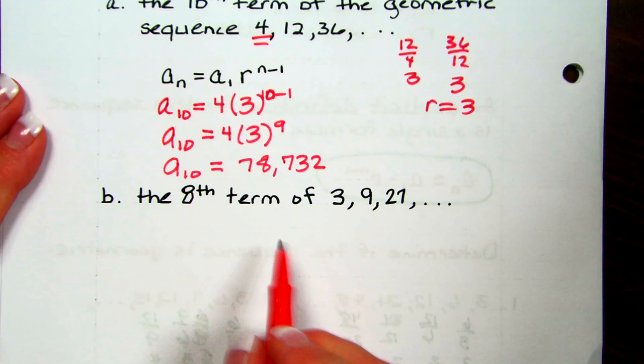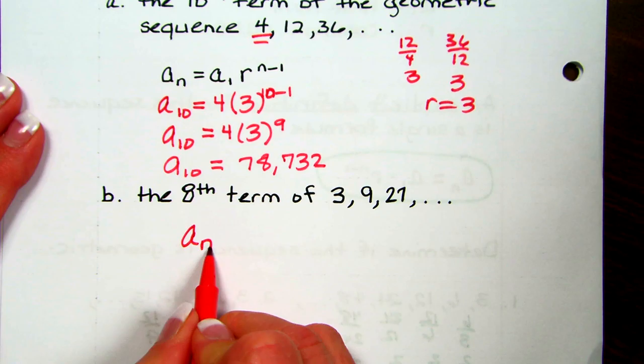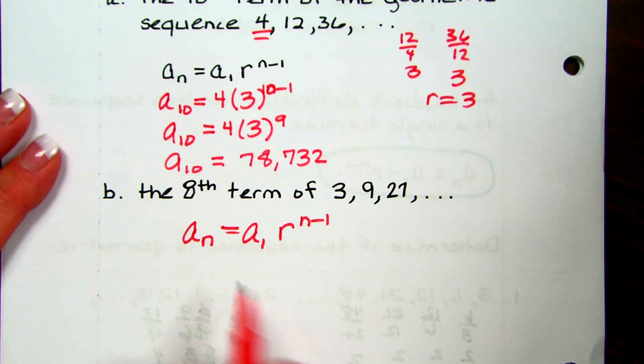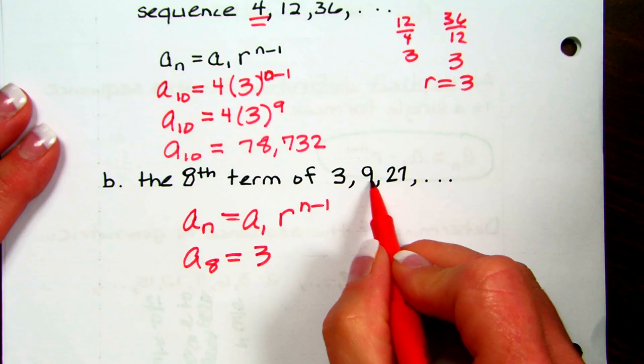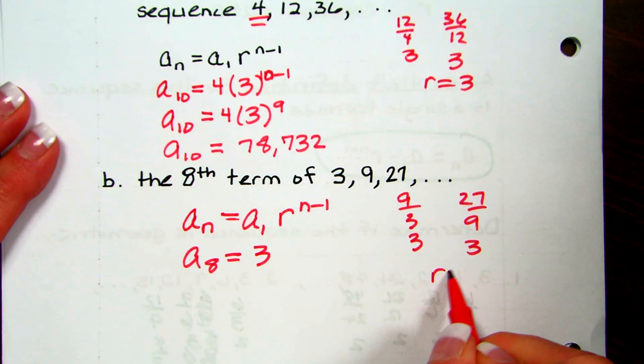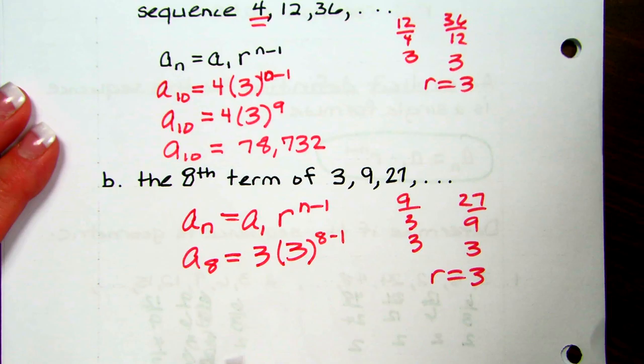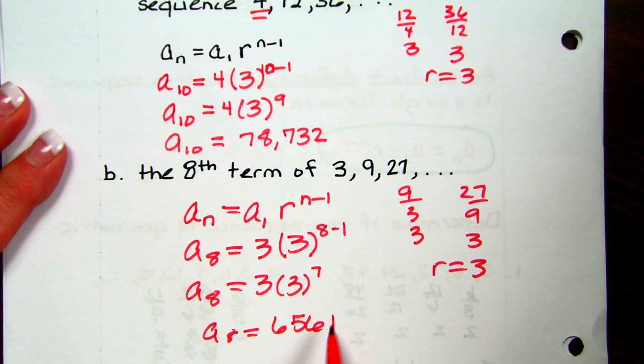The 8th term: we use A sub n equals the first term times R to the n minus 1. We're looking for the 8th term, and the first term is 3. 9 divided by 3 is 3, and 27 divided by 9 is 3, so R is 3. We have 3 times 3 to the 8 minus 1, so 3 times 3 to the 7th. The 8th term would be 6,561.